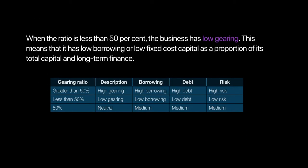A company with gearing greater than 50% is called highly geared. This means more than half of the total capital raised is fixed cost capital that must eventually be repaid. This company has high borrowing, high debt, and therefore higher financial risk for ordinary shareholders.